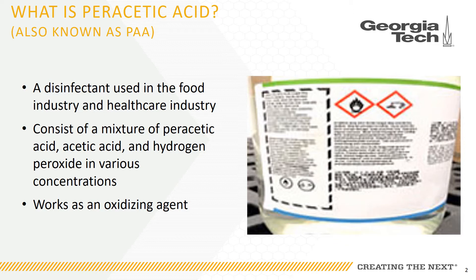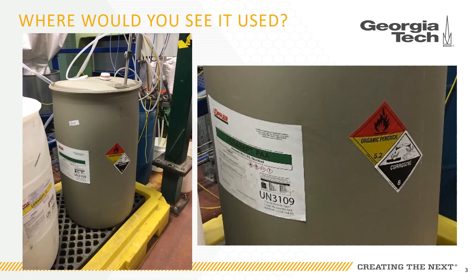Peracetic acid is used in many different applications, depending on the industry in which it is used. In hospitals, peracetic acid is used to chemically disinfect equipment and surfaces such as rubber tubing and catheters, endoscopes, kidney dialysis machines, and surgical instruments. In breweries, peracetic acid is used for disinfection in the bottling area and in clean-in-place, or CIP, techniques. Here is an example of a container of PAA used in that disinfection process.